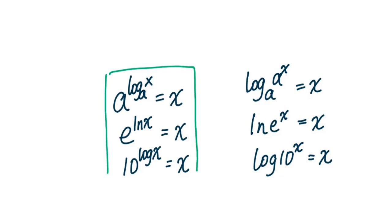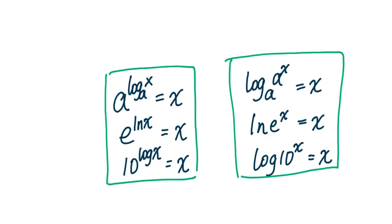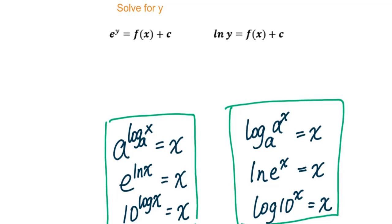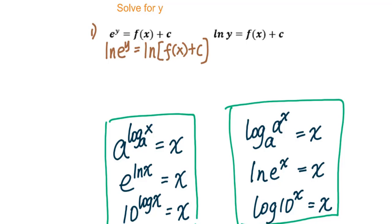Try to remember these logarithm formulas. For the first case, we take the natural log of both sides. You get natural log of e^y equals natural log of f(x) plus c. According to the formula natural log of e^y equals y, you get y equals natural log of f(x) plus c.